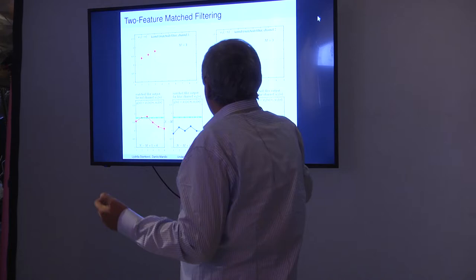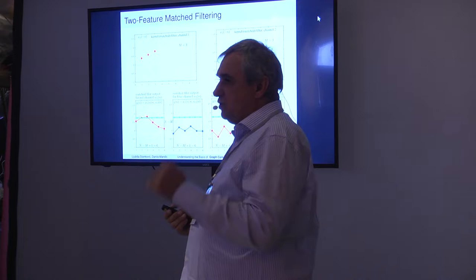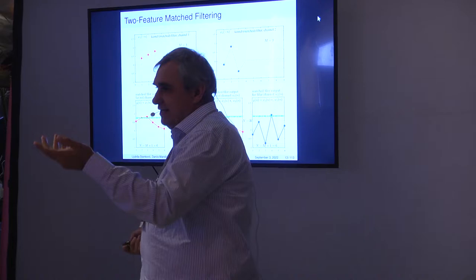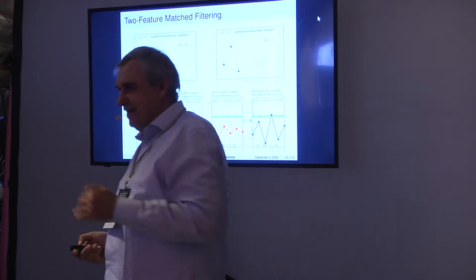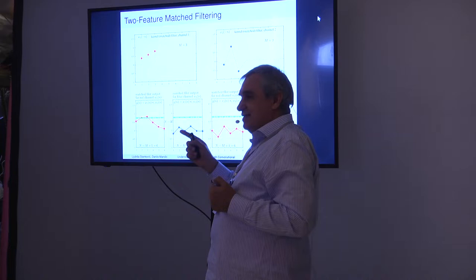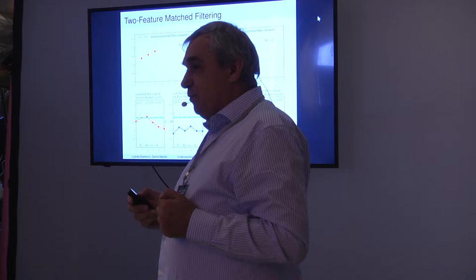How do you determine the threshold? For the match filtering output we just look for the maximum. For a neural network it is sufficient to consider the difference between maxima, which is why a fully connected layer is added. In signal processing the threshold would be obtained from the estimated noise variance — for example, two noise variances gives a 95% threshold. But for a neural network we usually want to decide which feature is present, so we just compare the two maxima and say this one is present.